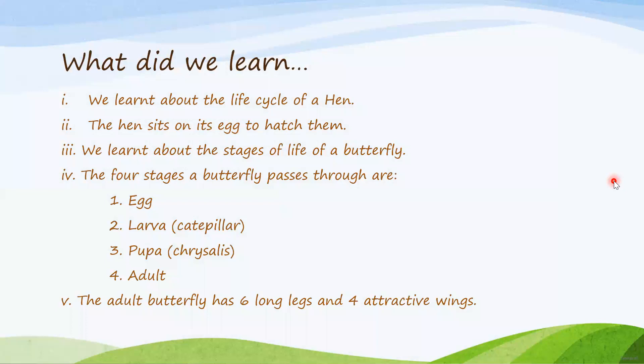We learned about the stages of life of a butterfly. The four stages a butterfly passes through are: egg, larva or caterpillar, pupa or chrysalis, and adult. The adult butterfly has six long legs and four attractive wings.